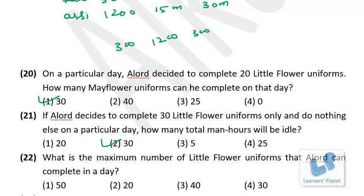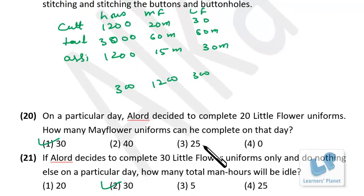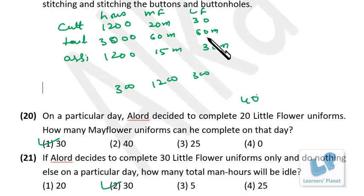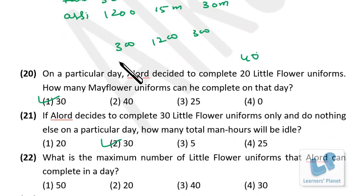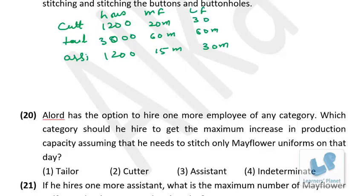Question 3: What is the maximum number of Little Flower uniforms that can be completed in a day? Cutting: 1200 ÷ 30 = 40 uniforms. Tailoring: 3000 ÷ 60 = 50 uniforms. Buttons: 1200 ÷ 30 = 40 uniforms. The bottleneck is cutting and buttons — maximum is 40 Little Flower uniforms.